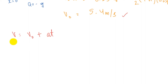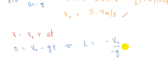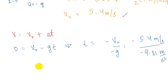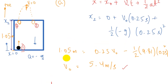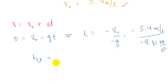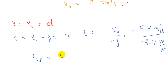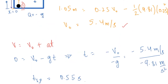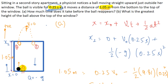Setting v = 0: 0 = v₀ + (−g)t, so t = v₀ / g. With v₀ = 5.4 m/s and g = 9.81 m/s², the time from point 1 to the peak point t₁ₚ = 5.4 / 9.81 = 0.55 seconds.